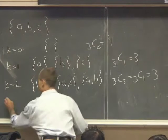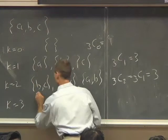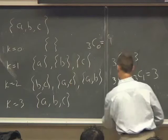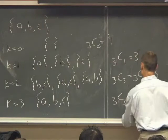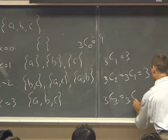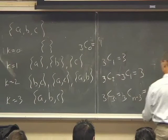And then for k equal 3, we only have one choice, all of them. That's 3 choose 3 equals 3 choose 0 equals 1.